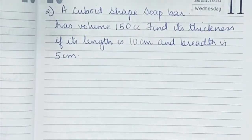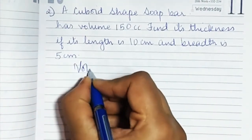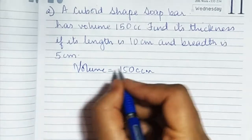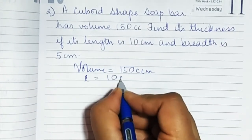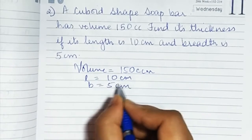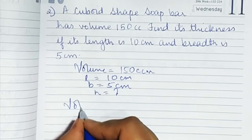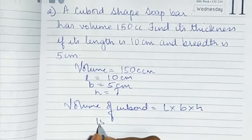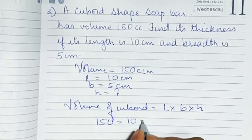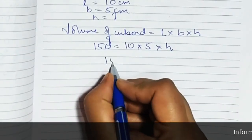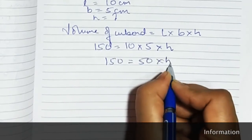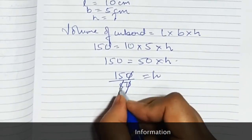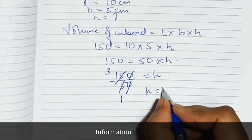A cuboid-shaped slab has a volume of 150 cubic centimeters. Find the thickness if its length is 10 and breadth is 5 — you have to find out the height. Using volume of cuboid = length × breadth × height: 150 = 10 × 5 × h, so 150 = 50 × h, therefore h = 150 ÷ 50 = 3 centimeters.